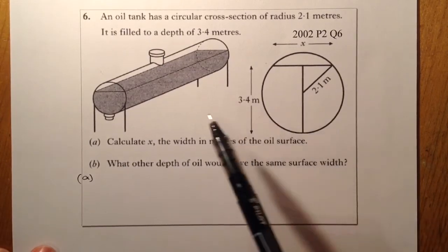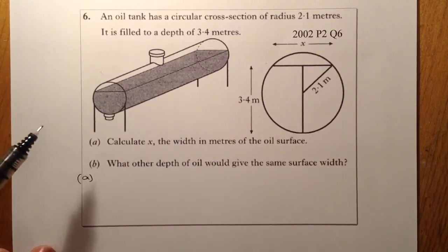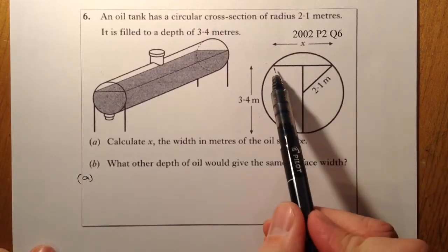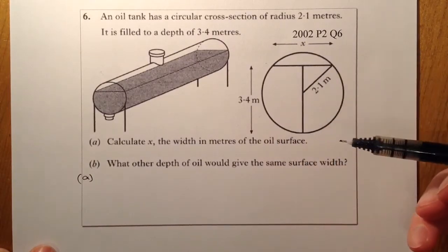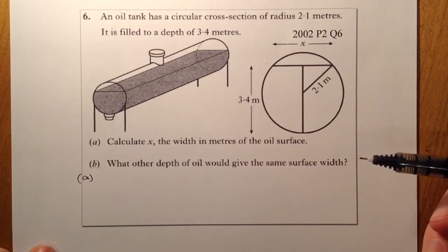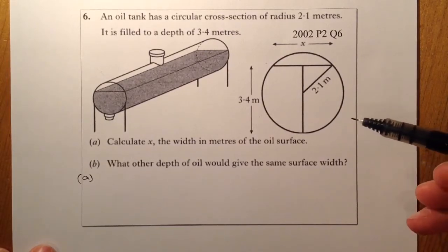Looking at this question here, normally with questions with a cross section of a circle, and we have to work out either the width of the oil surface or a depth, it normally looks like a Pythagoras theorem question, and I think this one will be that.